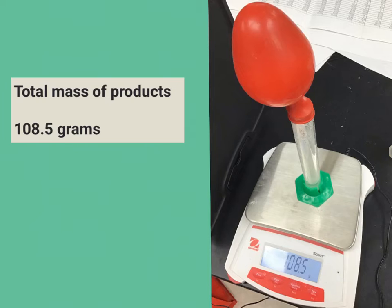The 108.5 grams in the products is equal to the 108.5 grams in the reactants that we started with. This means that the law of conservation of mass was followed and that we started and ended with the exact same amount.